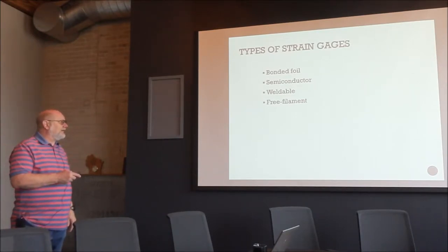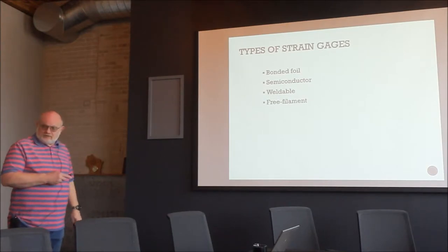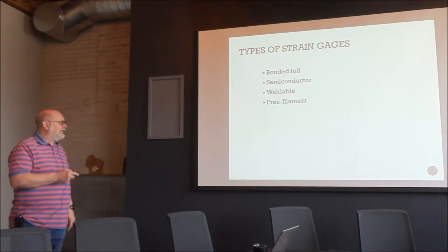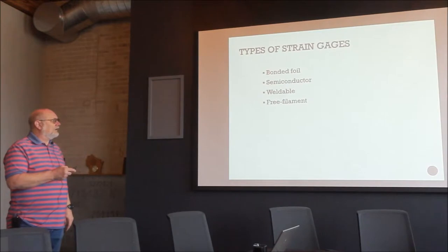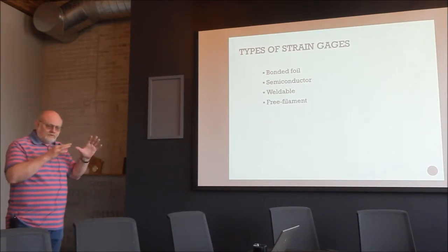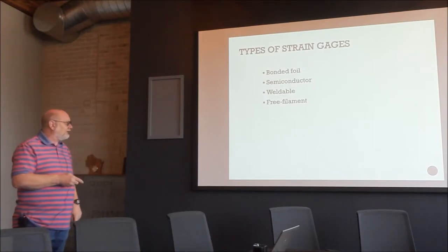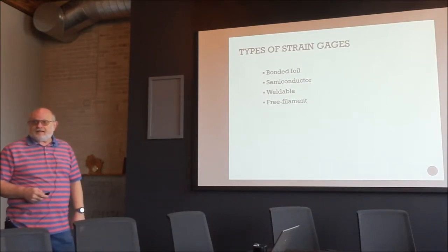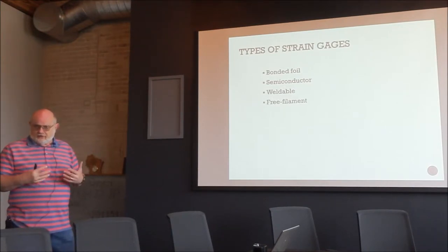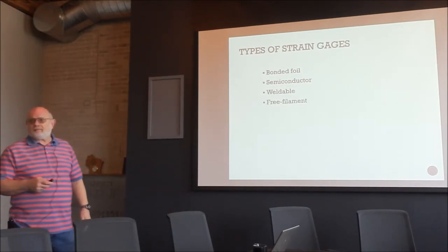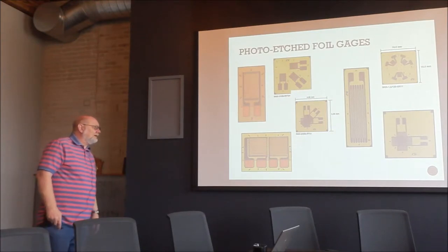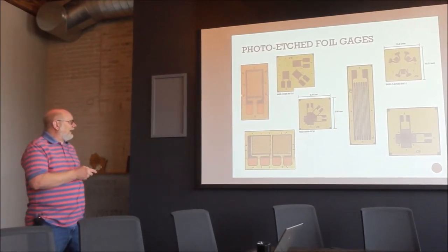The main types of gauges include bonded foil, semiconductor gauges — which are much more sensitive to strain but have stability and noise issues — and weldable gauges, which are foil or wire mounted on shim stock that can be spot-welded to the surface. Free-filament gauges are still used for all high-temperature work above about 600°C, where adhesives fail, applied similarly to thermal spray.